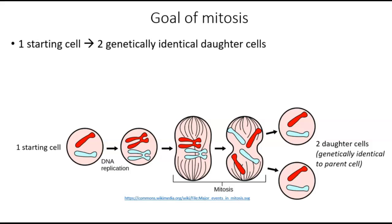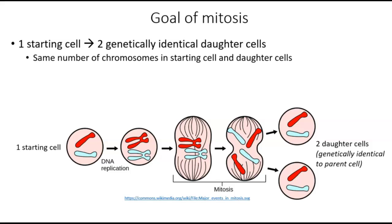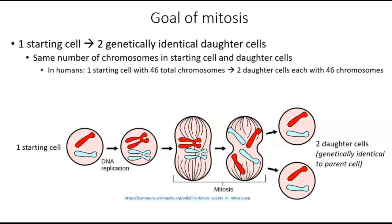The goal of mitosis is to take one starting cell and create two genetically identical daughter cells. These daughter cells should have the same number of chromosomes as the starting cell. In this diagram, we see one starting cell that has one red chromosome and one blue chromosome. Each of those chromosomes gets copied, and then the copies get pulled apart to create two daughter cells that each have one red chromosome and one blue chromosome, just like the starting cell. In humans, the starting cell would have 46 total chromosomes, and those two daughter cells would each have the same 46 chromosomes. Each daughter cell must get the same combination of chromosomes, so it's really important to divide up the chromosomes so that each daughter cell gets exactly one of every chromosome.